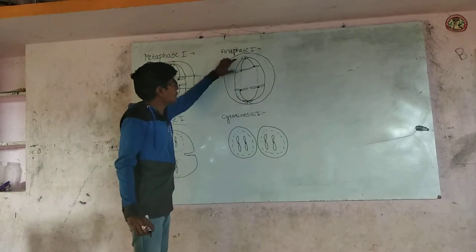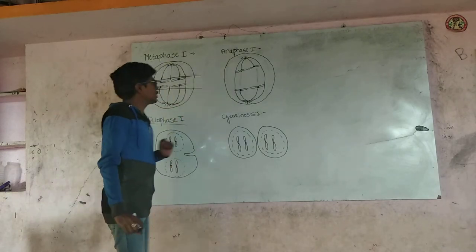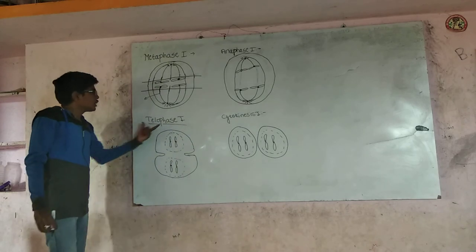Homologous chromosomes separate and move towards the opposite poles. Then Telophase I.